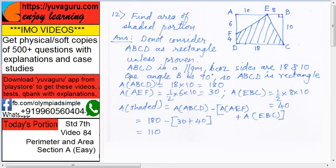Now, once you know it is a rectangle, then ABCD, area of ABCD is what? 18 into 10, length into breadth, 180.